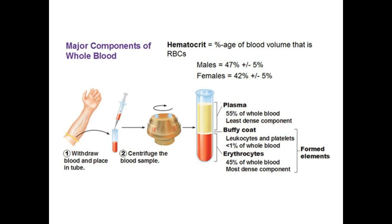Hematocrit is the percentage of blood volume that is RBC or red blood cells. The hematocrit value for males is 47% plus or minus 5%, and for females 42% plus or minus 5%. Hematocrit, also known as packed cell volume, consists of 55% plasma and 45% erythrocytes.